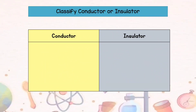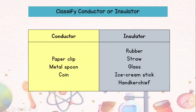Now, let's group and classify the objects into conductor or insulator. Paper clip, metal spoon, and coin are conductors, while rubber, straw, glass, ice cream stick, and handkerchief are insulators.